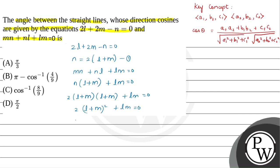Expanding using the (A + B)² formula gives 2(L² + M² + 2LM) + LM equals 0. Simplifying, we get 2L² + 2M² + 5LM equals 0. Now let us divide both sides by M².